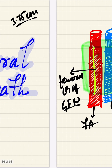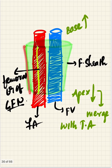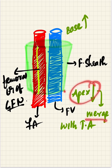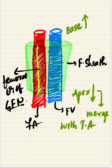The femoral sheath is funnel-shaped, enclosing the upper part of the femoral vessels. The base of the sheath is directed upward towards the abdominal cavity, and the apex merges with the tunica adventitia of the vessels. The femoral sheath contains a femoral artery, a femoral vein, and the femoral branch of the genitofemoral nerve.